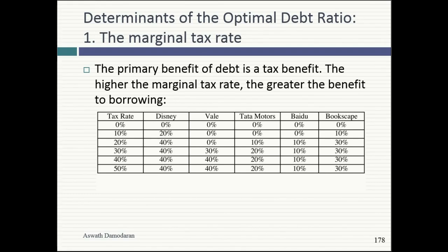Now let's think about why the optimum varies across companies. I took all five of my companies, held everything else constant, and changed the tax rate from 40% to 30% to 20% to 10% to 0%. At 0% tax rate, what's the optimal debt ratio for every company? Zero. The tax benefit is the primary driver of borrowing. Remove it and the entire rationale collapses.